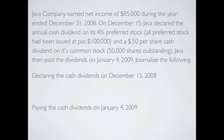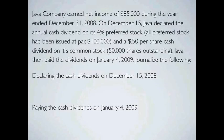Let's look at a simple example of the payment of dividends. We have Java Company. They earned net income of $85,000 during the year ended December 31st, 2008. On December 15th, Java declared the annual cash dividend of its 4% preferred stock — all preferred stock had been issued at par, which was $100,000 — and a $0.50 per share cash dividend on its common stock, with 50,000 shares outstanding. Java then paid the dividends on January 4th, 2009.